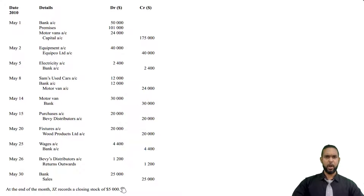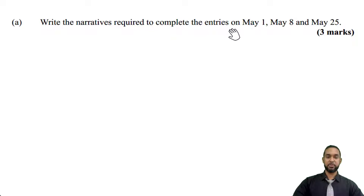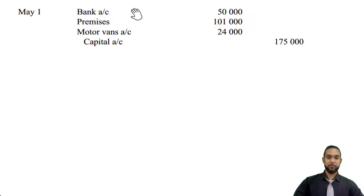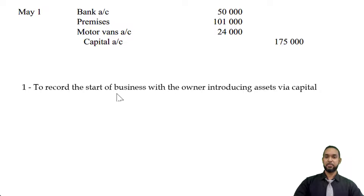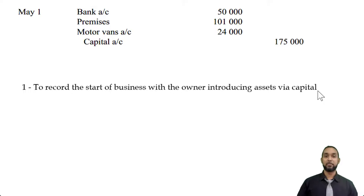Part A says: write the narratives required to complete the entries on May 1st, 8th, and 25th, worth three marks. Now I don't just like to give you exactly what you need, so we are going to go through all the transactions and make a narrative for each of them. For the first transaction, bank, premises, and motor vans are being debited and capital is being credited. That looks like the owner is starting business, introducing assets by capital. These narrations are not hard and fast — there are many different articulations. Feel free to put your version in the comments below.